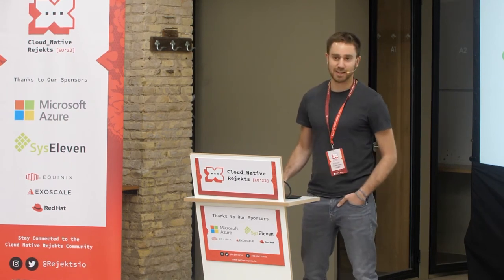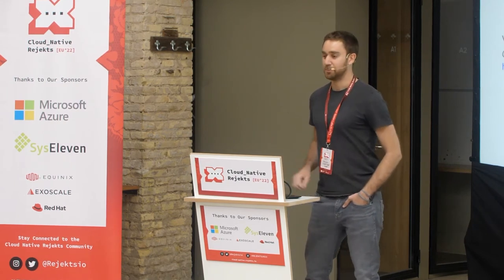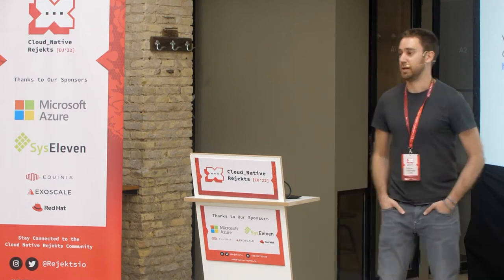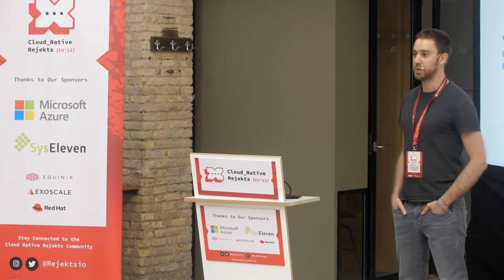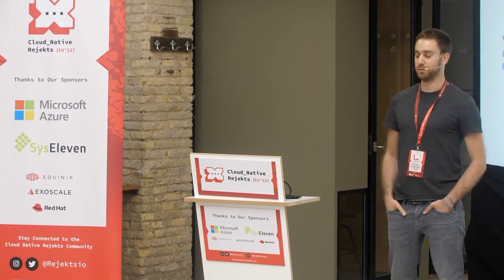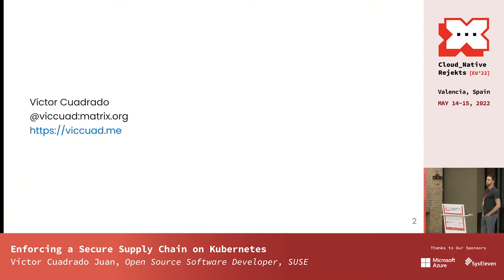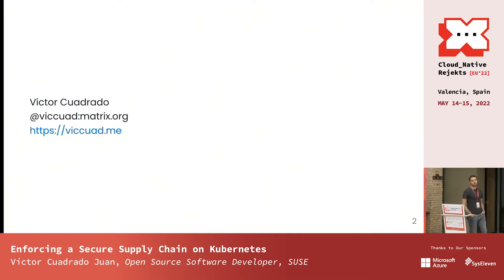Who am I? I'm Victor Cuadrado. I work at SUSE as an open source software developer. If you want to contact me, I don't have Twitter, but you can contact me on the Matrix Network — you have my handle there — and you have my personal page.